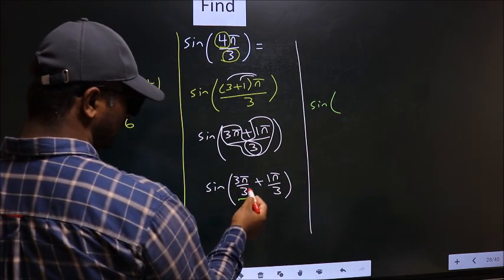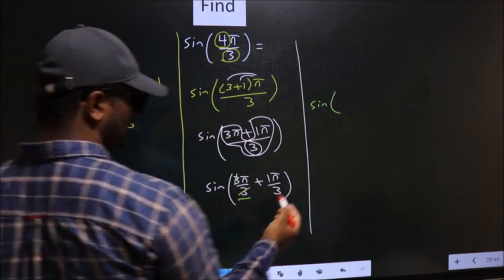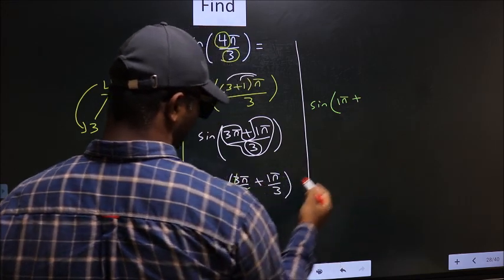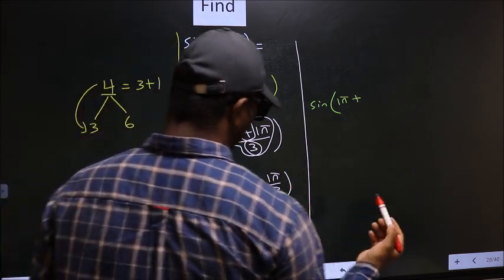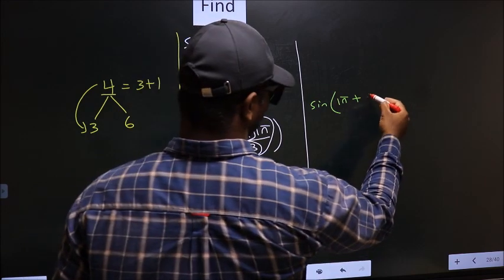3π by 3 is nothing but 3 cancel out. You get 1π plus this angle will remain as it is, π by 3.